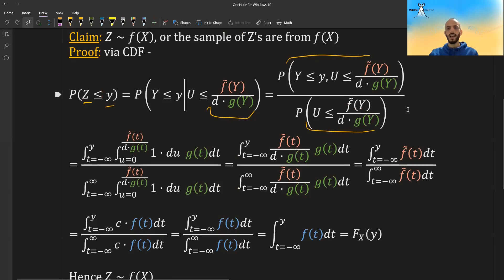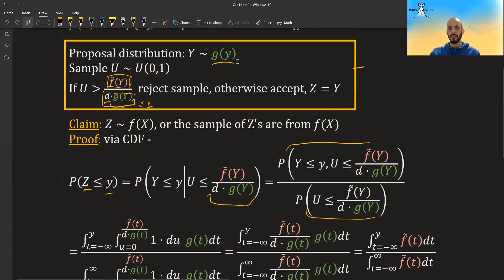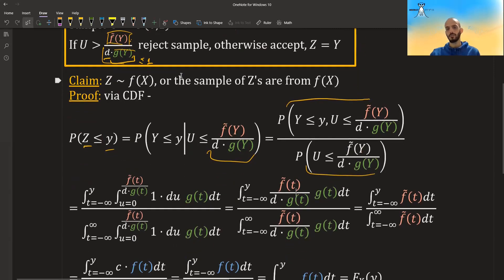And how do we move forward? Well, what is the joint distribution? U is uniform 0, 1. It is completely independent from y. Y comes from g(y). It's some proposed distribution. It has nothing to do with u. So the joint distribution is just the double integral of the pdf of y times the pdf of u.